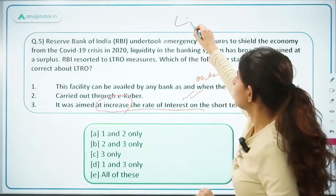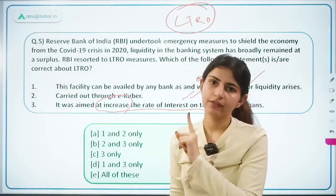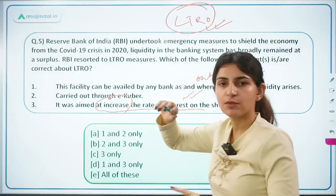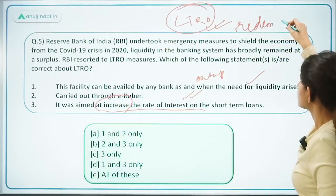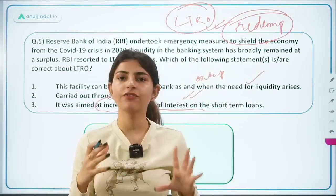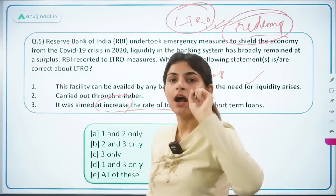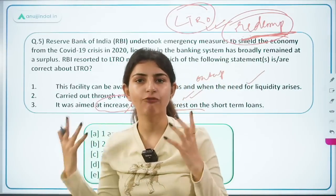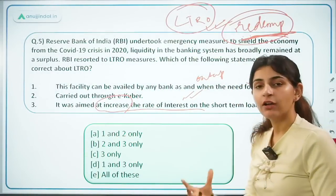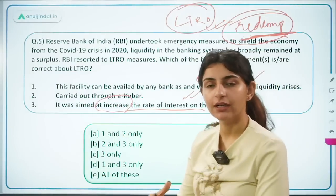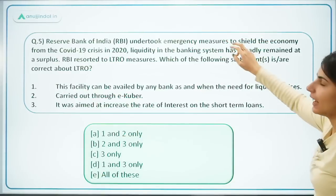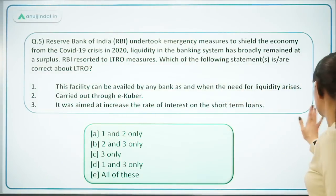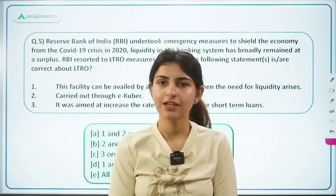One more important point: the long-term repo operations were done to inject liquidity in the economy. As those three-year securities mature, redemption is happening — banks must repay the amount borrowed, which reduces liquidity. This is why liquidity is now moving from surplus to neutral. Which are the eligible securities for SLR? And what is UPI Lite? — these are easy questions for Phase 1 exams. UPI Lite is a new payment solution to process low-value transactions using money stored in the UPI Lite wallet. Thank you for watching.